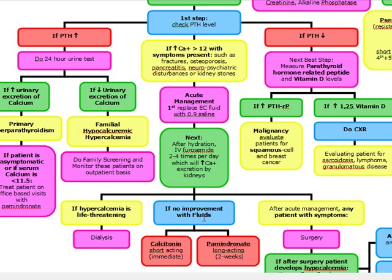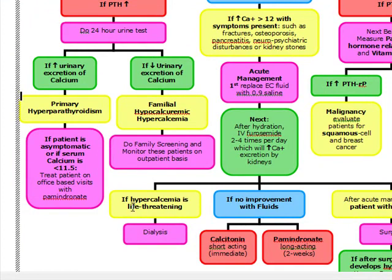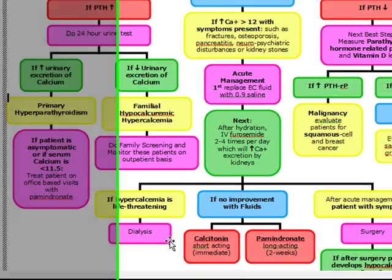If there's no improvement with fluids, we're going to give calcitonin, which is short-acting, and pamidronate, which is long-acting and usually takes about two weeks to kick in. So we want to immediately give calcitonin and pamidronate for the long term. If there's no improvement with fluids and the hypercalcemia is life-threatening, we're going to do dialysis.